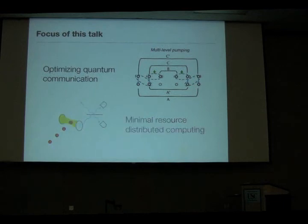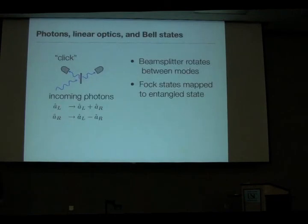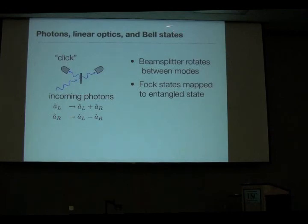Focusing first on optimizing quantum communication, I should mention the simplest ideas behind communication. There hasn't been much discussion of this specialized type of error correction, which is quantum communication. The simplest thing is that with photons, linear optics are going to be an extremely useful way to measure and create Bell states, using the indistinguishability of photons.